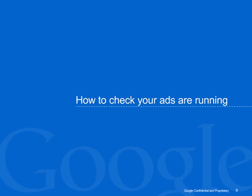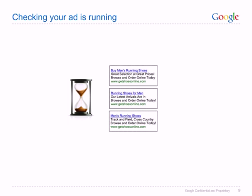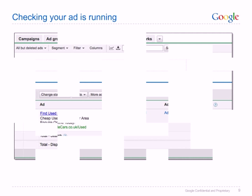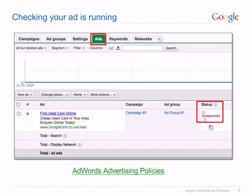Now create ads to match those keywords. We recommend creating two or three different ads per ad group. That way, over time, you can test which one works best for you. Setting up your campaign this way allows your ads to show when they're most relevant to your potential customers. Also, make sure you're targeting the right audience. Consider where your customers are located and what language they speak, and make sure to check your location and language settings.